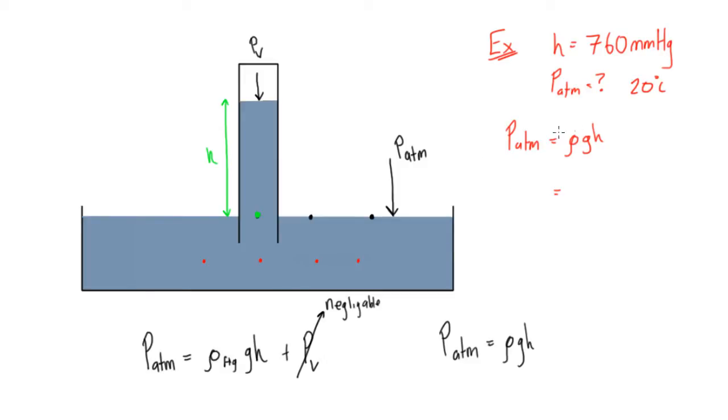If you look up ρ of mercury at 20 degrees Celsius, you'll find it's 13,550 kilograms per cubic meter. Actually, we're gonna run out of space here, so let's move this whole thing over.